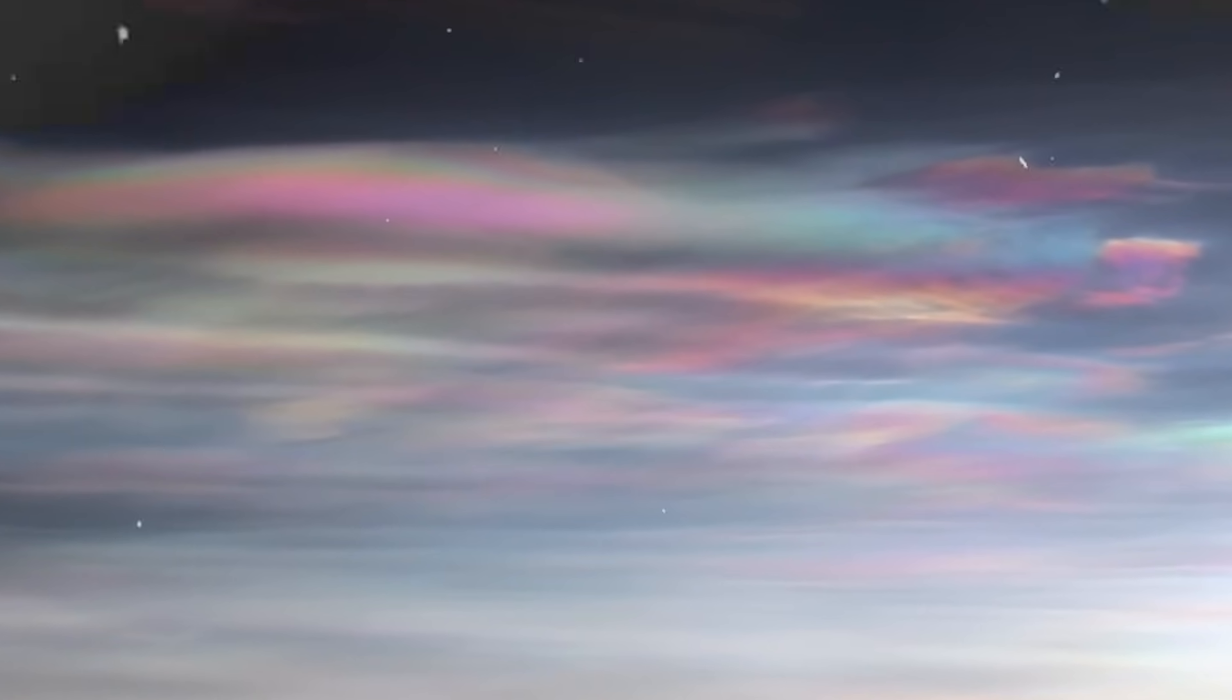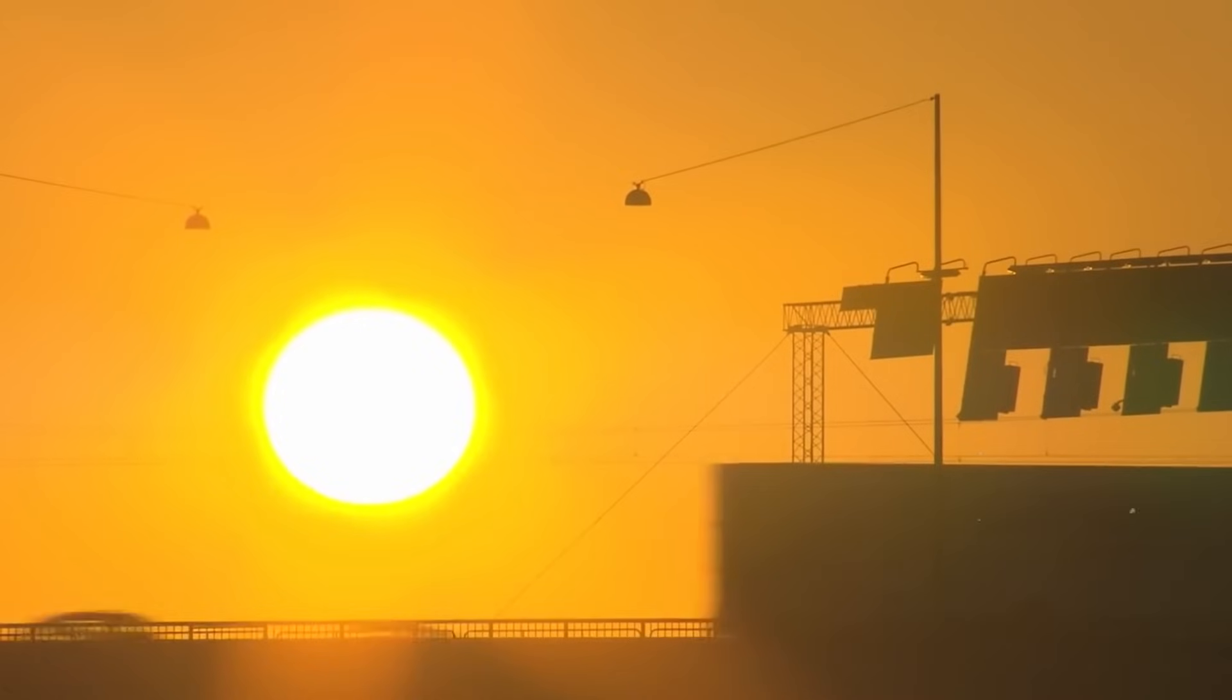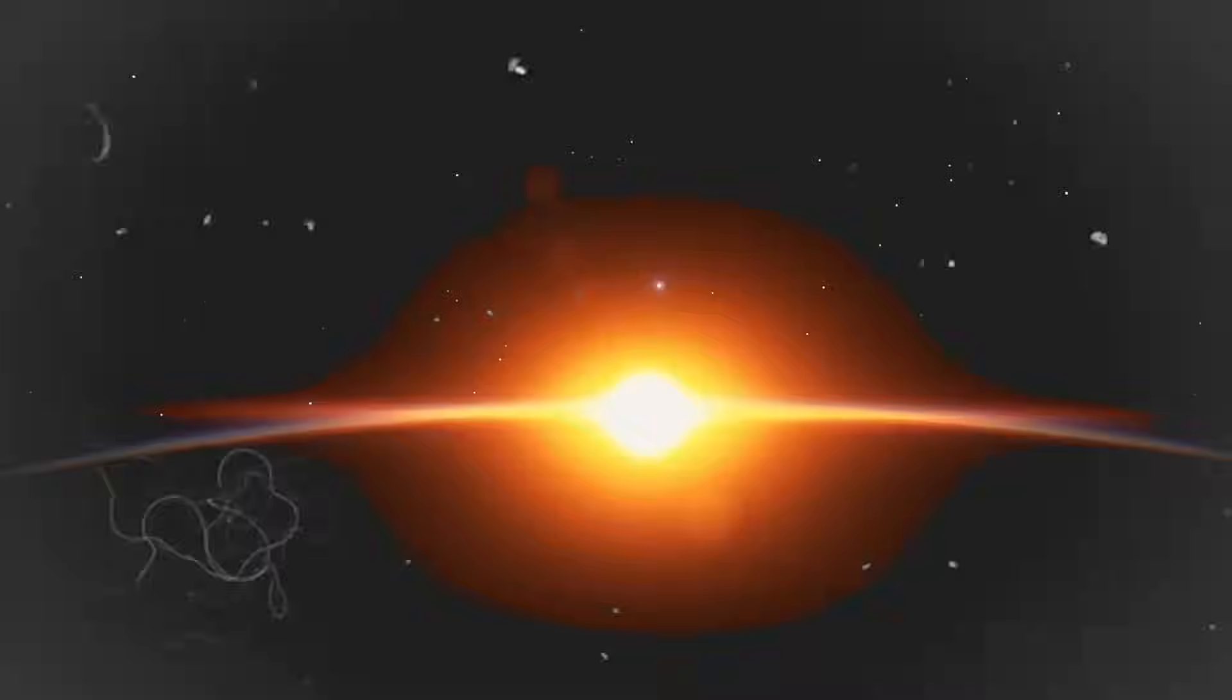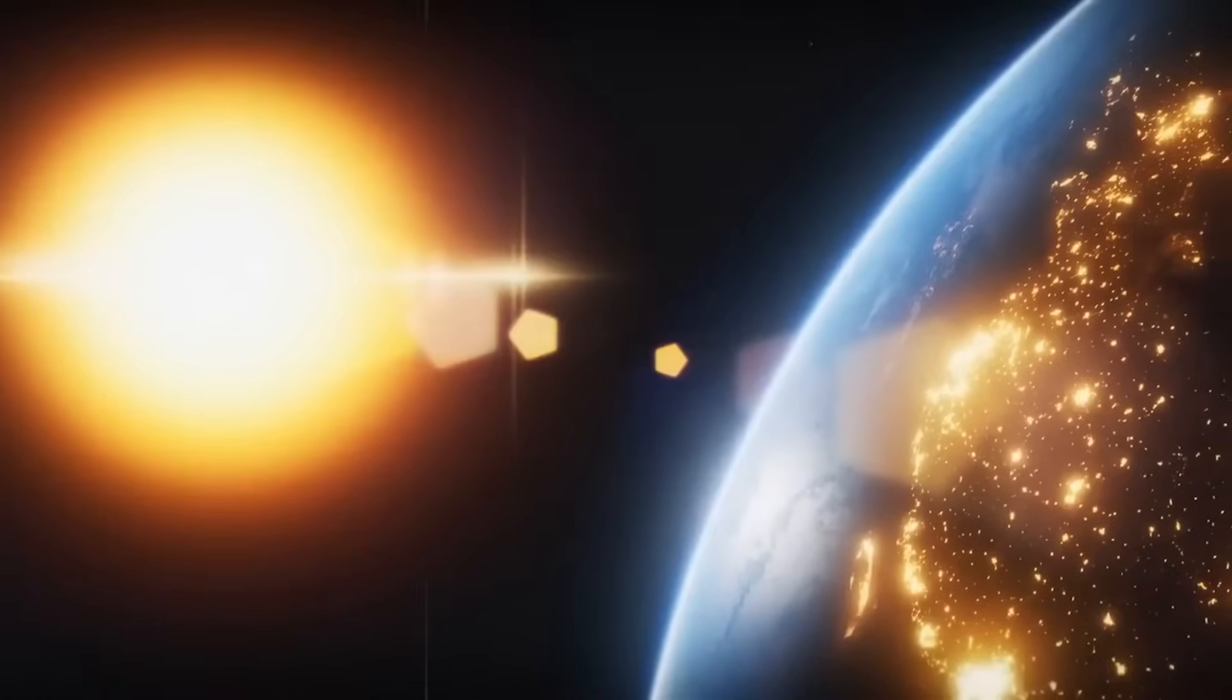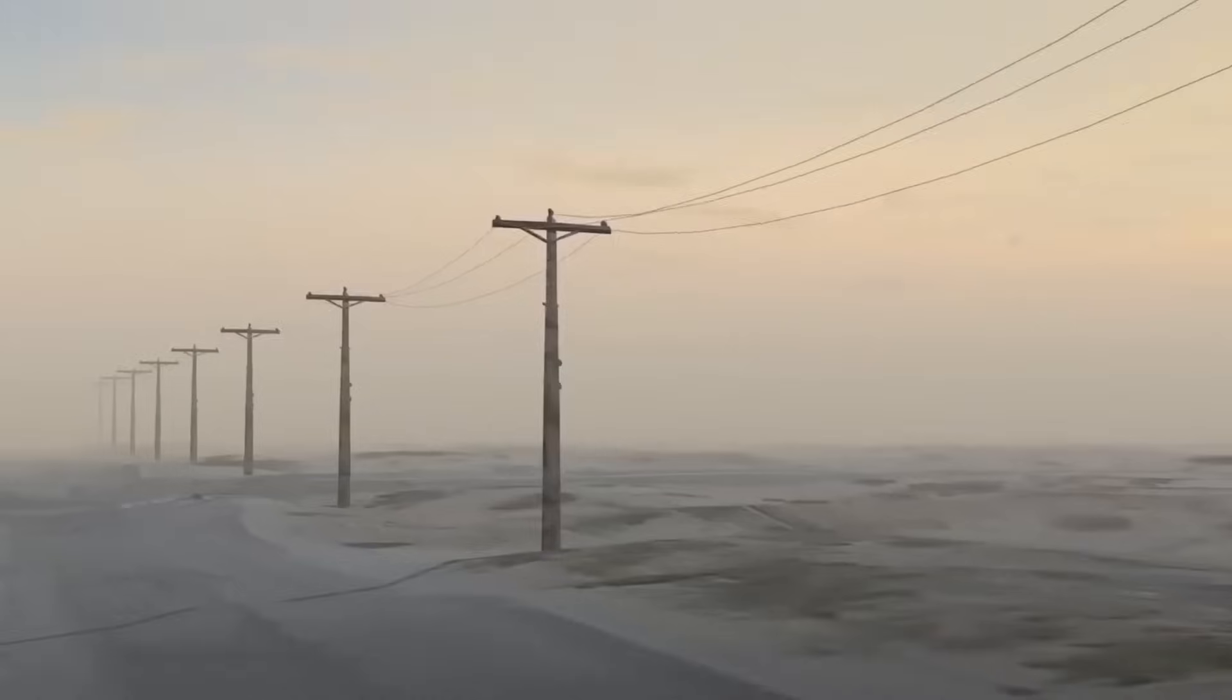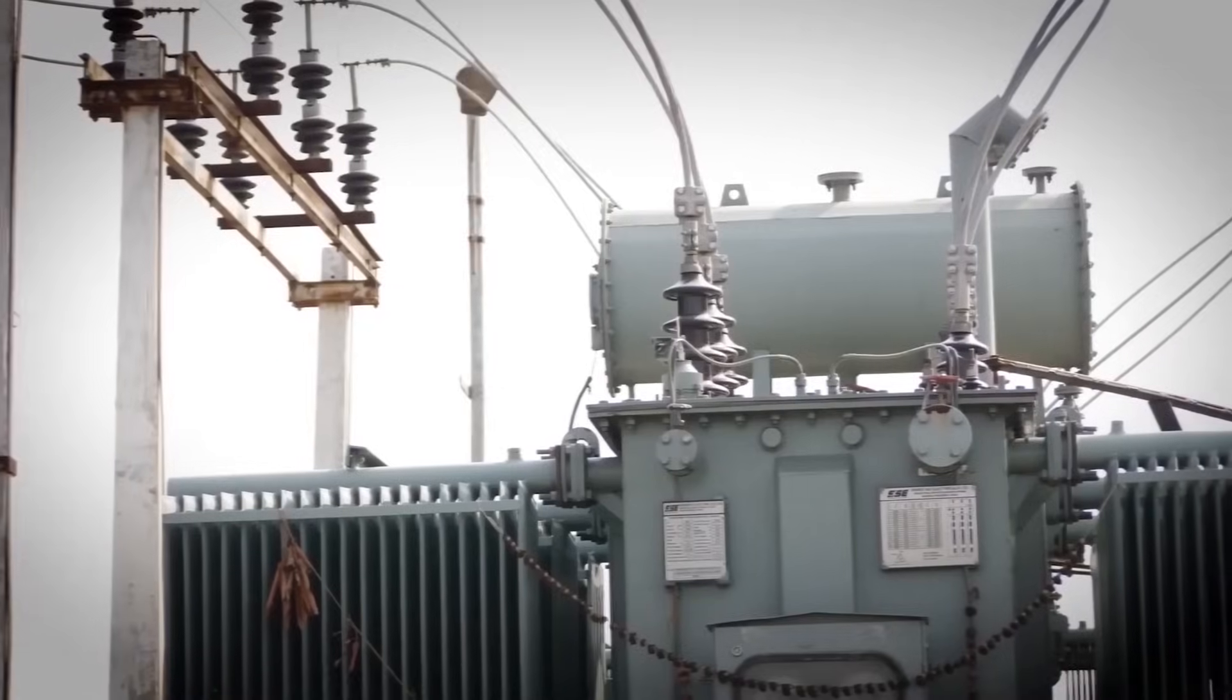Additionally, the weakened magnetic field provides less protection against solar radiation, increasing the risk of damage to the sensitive electronics onboard satellites. Weakened magnetic field could allow more solar-charged particles to reach the Earth's atmosphere, inducing strong electrical currents in power lines. These currents can overload electrical grids, causing widespread blackouts and disrupting essential services such as lighting, heating, and water supply.